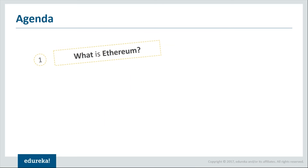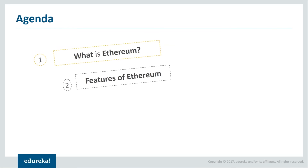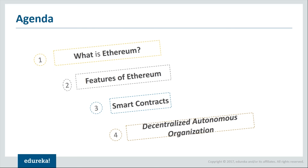We'll first address the most essential question: what is Ethereum. Following that we'll talk about the various features of Ethereum which make it quite popular, following which we'll be talking about smart contracts and we'll also look at decentralized autonomous organization. Smart contracts and DAO — short for decentralized autonomous organization — are two of the most popular interests in the Ethereum domain.